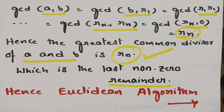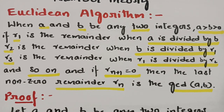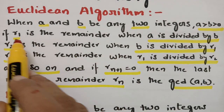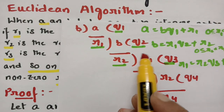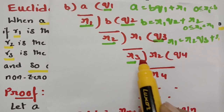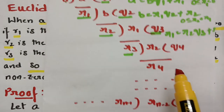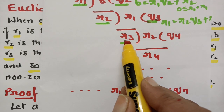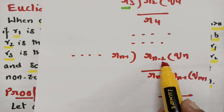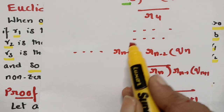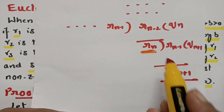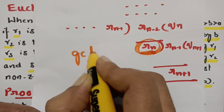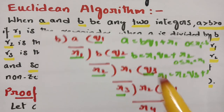This is the Euclidean algorithm. The statement is very clear: R1 is the remainder when A is divided by B; R2 is the remainder when B is divided by R1; R3 is the remainder when R1 is divided by R2; R4 is the remainder when R2 is divided by R3; and so on. Rn is the remainder when Rn−2 is divided by Rn−1. If Rn+1 = 0, the last non-zero element Rn is the GCD of A and B.